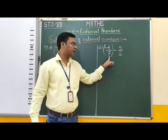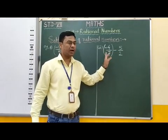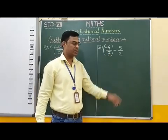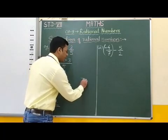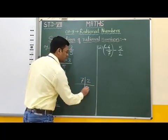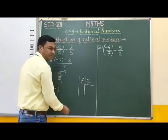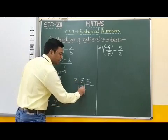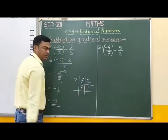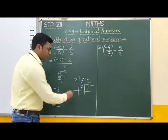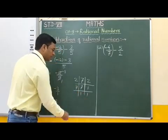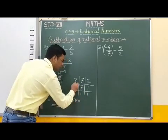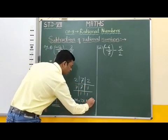Now students, here the denominators of these two rational numbers are different. Therefore, we have to find the LCM of the denominators. LCM of 7 and 2: 2 is divisible by 2, so we write 2; 7 is not divisible by 2, so we write 7 as it is. Now 7 is divisible by 7, so we write 7, and 1, 1. Therefore LCM of 7 and 2 is equal to 2 into 7, which is equal to 14.